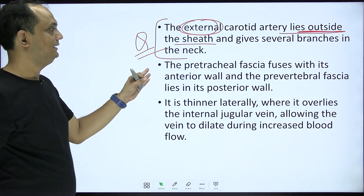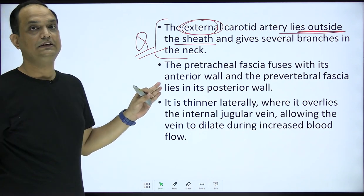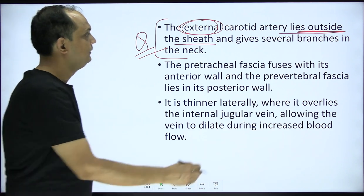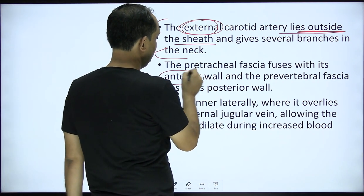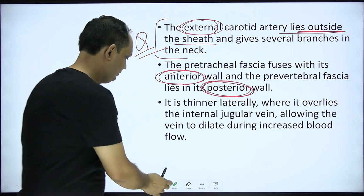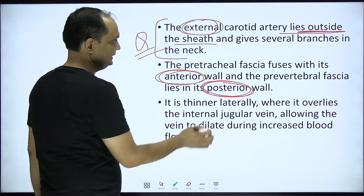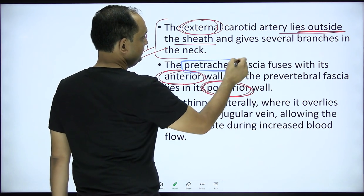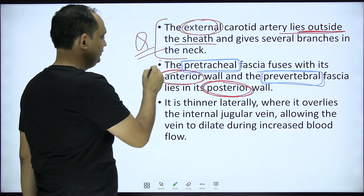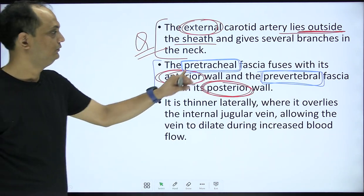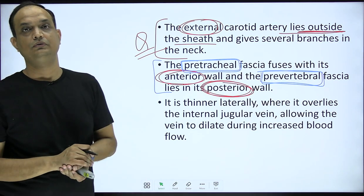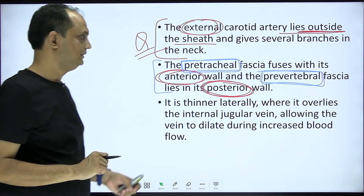The pre-tracheal fascia fuses with the anterior wall of the carotid sheath, and the pre-vertebral fascia fuses with its posterior wall. So the anterior wall contribution comes from the pre-tracheal fascia and the posterior wall contribution comes from the pre-vertebral fascia. We have already discussed how these two fasciae contribute to the formation of the carotid sheath.